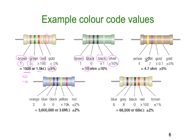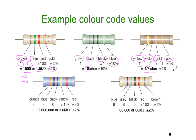Our final three-band example is yellow, then violet, then gold, and then gold again. This tells us 4, 7, and the gold means we multiply by 0.1, so we're going down by a tenth. That gives us 4.7, in other words 0.47 moved one decimal place — so it's 4.7 ohms. The second gold band tells us we're plus or minus 5% on that.